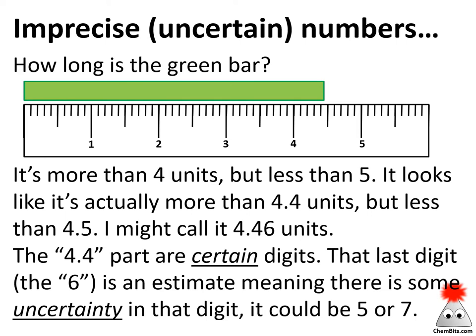What happens when we get to numbers that have uncertainty — measured numbers? Here I've got a green bar and a little ruler right next to it. How long is that green bar? Well, now we have to decide how to report that. This is sig figs, but it's sig figs that you've used — you just didn't really know they were called sig figs. Looking at this, the green bar is definitely longer than four and definitely shorter than five. So are we just going to report this as four? Probably not, because if we look more closely, it's somewhere between 4.4 and 4.5.